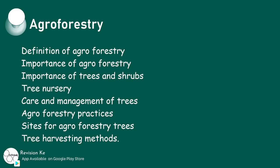Having defined agroforestry, our next objectives are to state the importance of agroforestry, describe various forms of agroforestry, explain the importance of trees, select appropriate trees for different uses, describe tree nursery management and transplanting, explain routine tree management, select appropriate sites for trees in the farm, and describe the various methods of agroforestry. This covers all agriculture topics from form 1 to form 4, as this is the last agriculture topic.